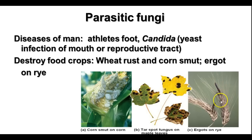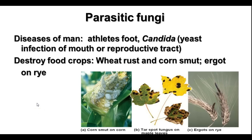Ergot is a fungus that can grow on rye and produces poisons. For instance, if rye or wheat is used in feed for cows or horses, certain kinds of fungi can cause a poisoning called aflatoxicosis, which can be very, very dangerous and even deadly to some animals.